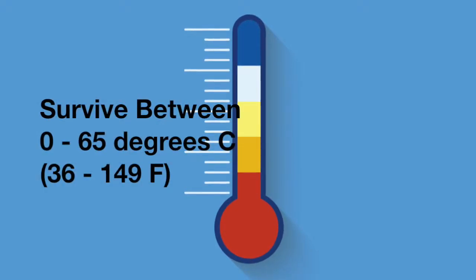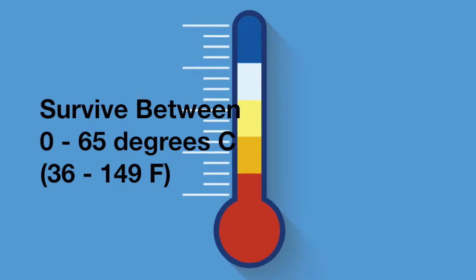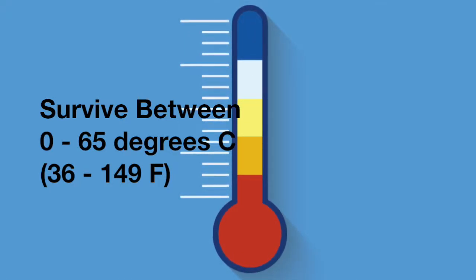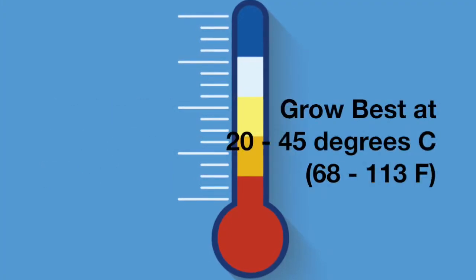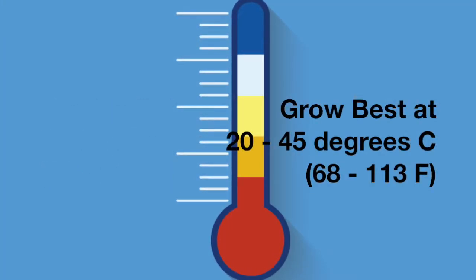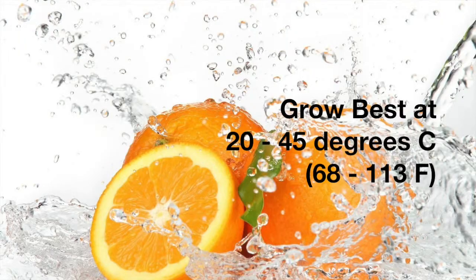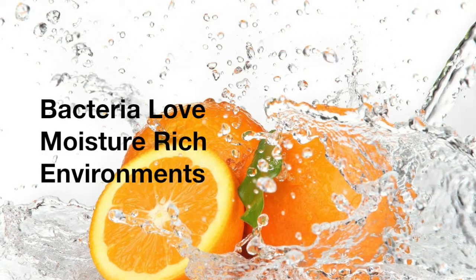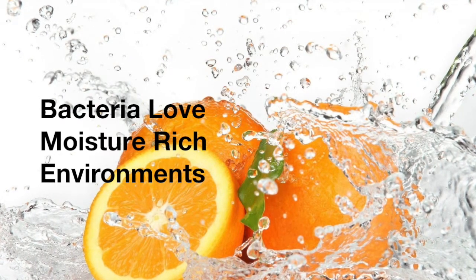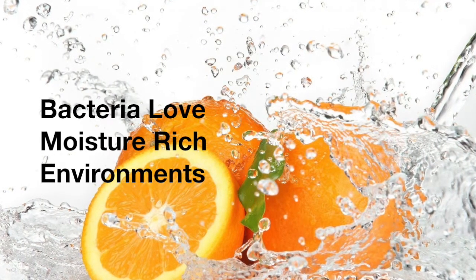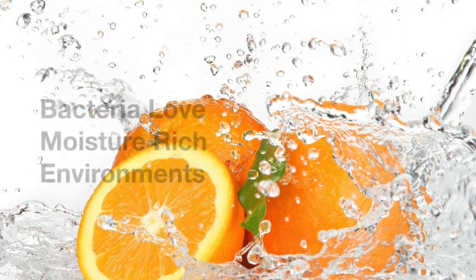Let's take a look at temperature. In general, with bacteria — there are always exceptions — we see that bacteria can grow in a very large temperature zone. Bacteria can survive between 0 to 65 degrees Celsius, but on a human-associated level they grow at their best between 20 and 45 degrees Celsius.